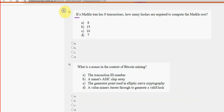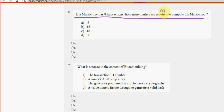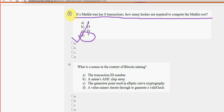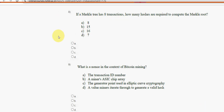Eighth question: if a Merkle tree has eight transactions, how many hashes are required to compute the Merkle tree? For the eighth question, option D — 7 — is the probable solution. Mark option D as the probable solution for question 8.